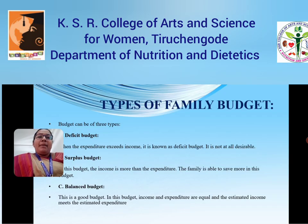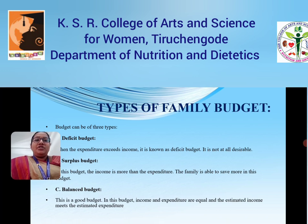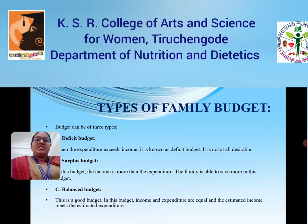There are three types of family budget: deficit budget, surplus budget, and balanced budget. A deficit budget is one where expenditure exceeds income, which is not desirable. In a surplus budget, income is more than expenditure and the family is able to save more. A balanced budget is considered a good budget system, where income and expenditure are equal and the estimated income meets the estimated expenditure.